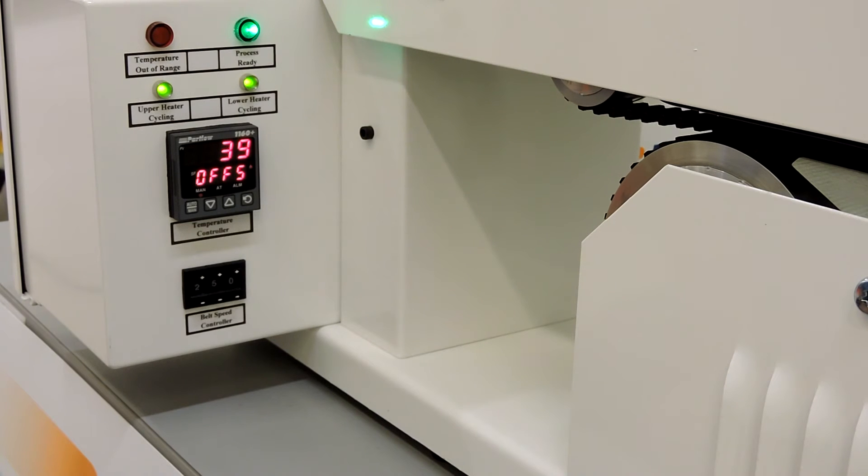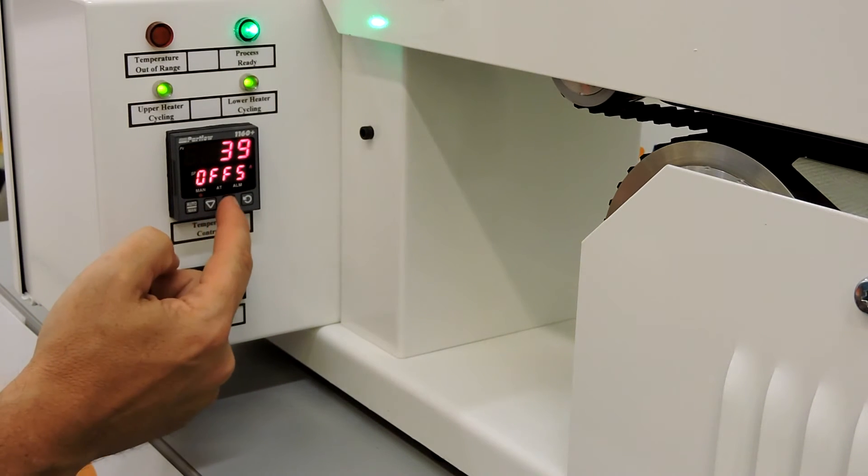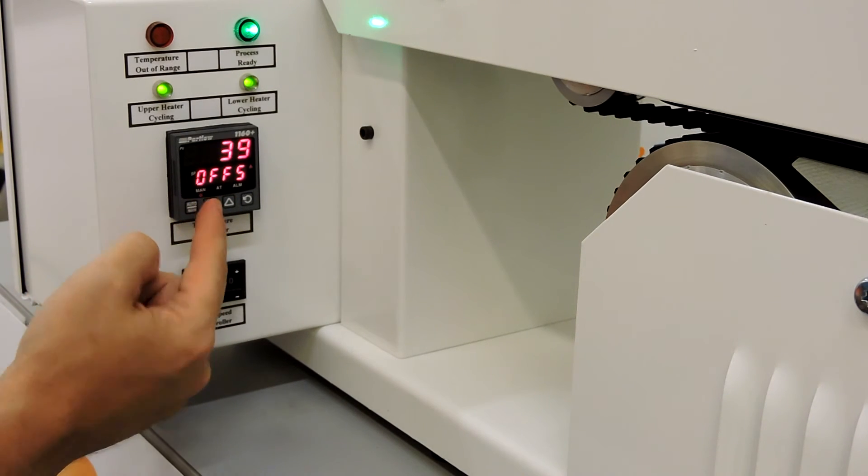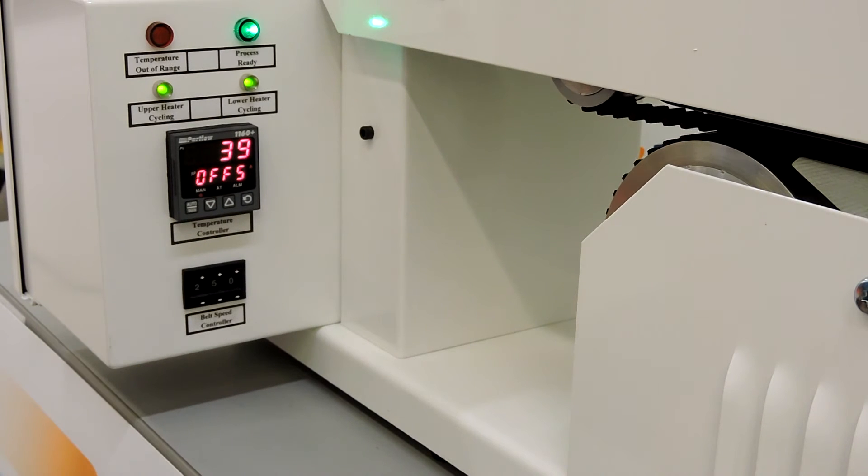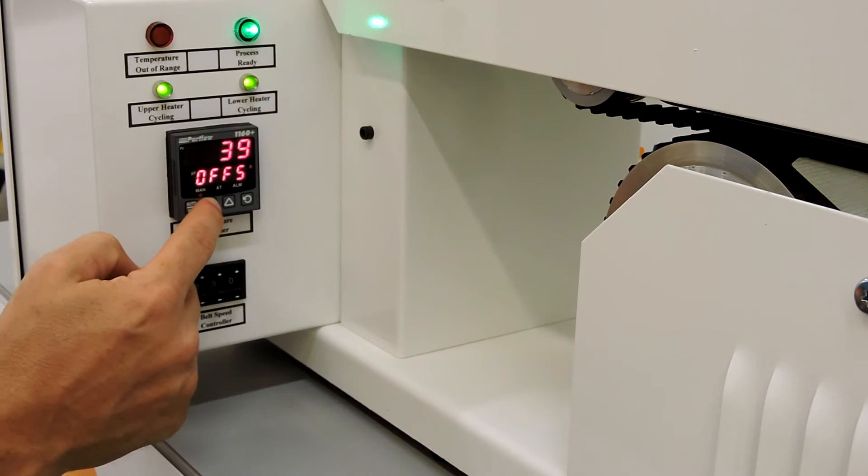Adjust the offset controller by using the up and down arrow keys. The up arrow key is used if the temperature is too high. The down arrow key is used if the temperature is too low. As a rule of thumb, adjust the offset 2 degrees for every 1 degree of the actual probe readings from the temperature probe.